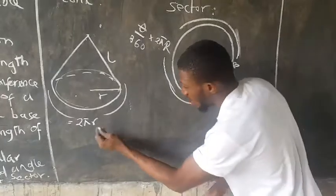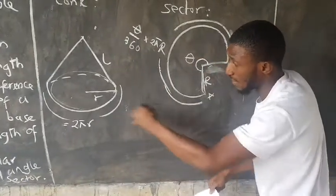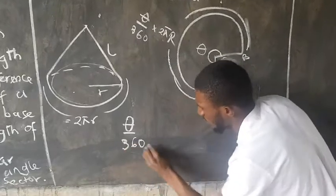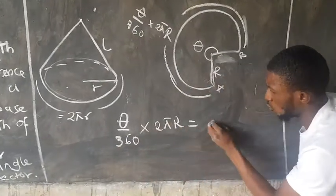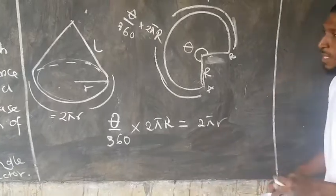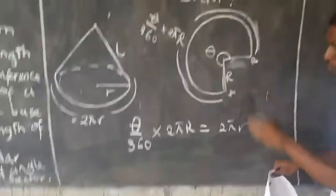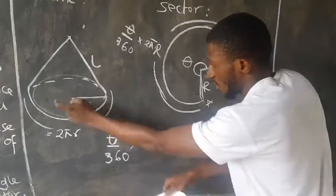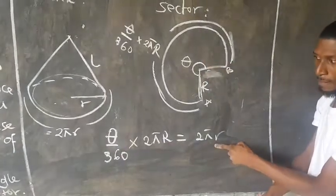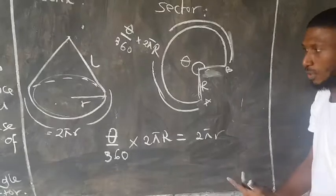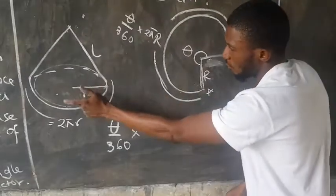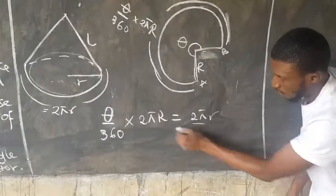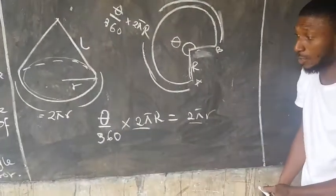Since this arc length is the total circular base of this cone, we can write the expression connecting them mathematically as: θ/360 × 2πR = 2πr. This arc length, when used to form the cone, gives the total circumference of the base, which is 2πr. To find the relationship between the radius of the sector and the radius of the cone, divide both sides by 2π.